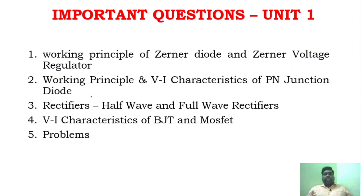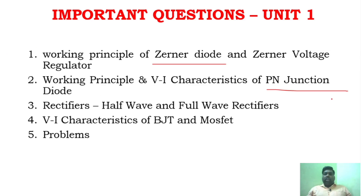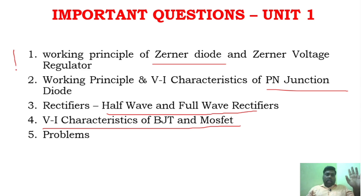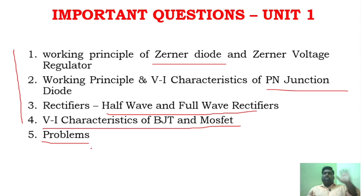Now we will see the important question discussion. For unit 1, I have given four questions. First is Zener diode — learn its working and how it acts as a voltage regulator. Similarly, P-N junction diode characteristics, V-I characteristics and working principle, and V-I characteristics of UJT are all important. Also, half-wave and full-wave rectifiers are key topics. Make sure you go through all four questions, because one question will be a problem and one question will be theory.